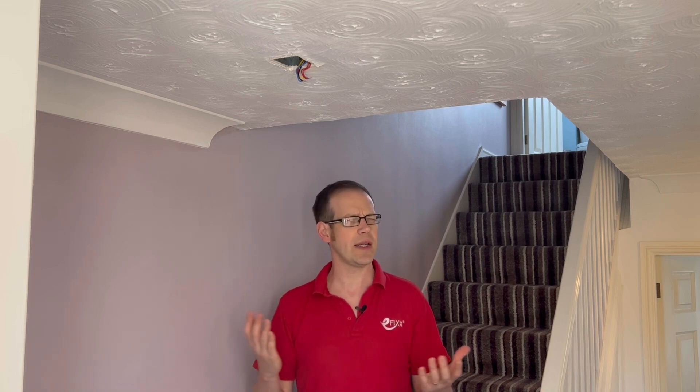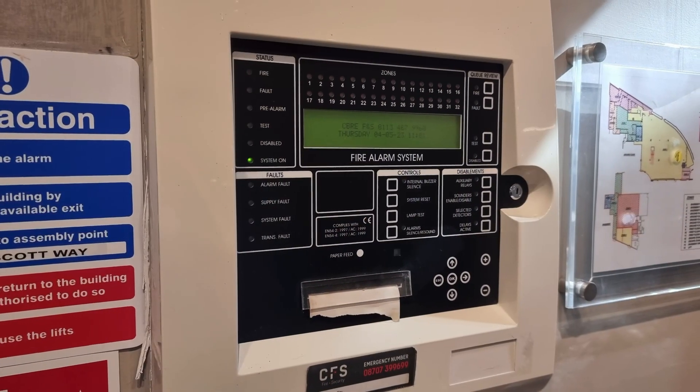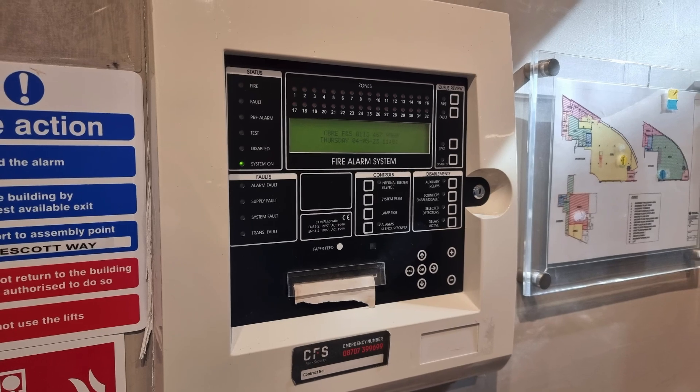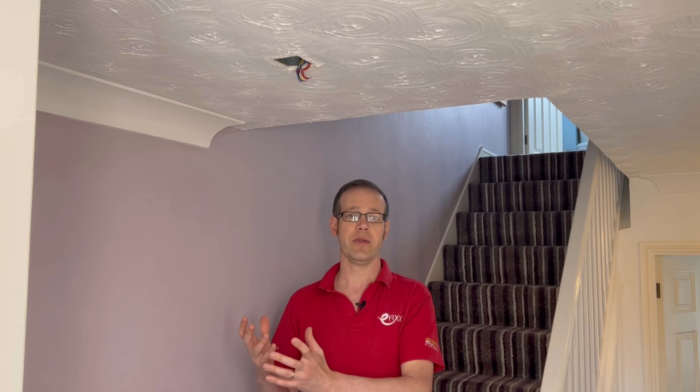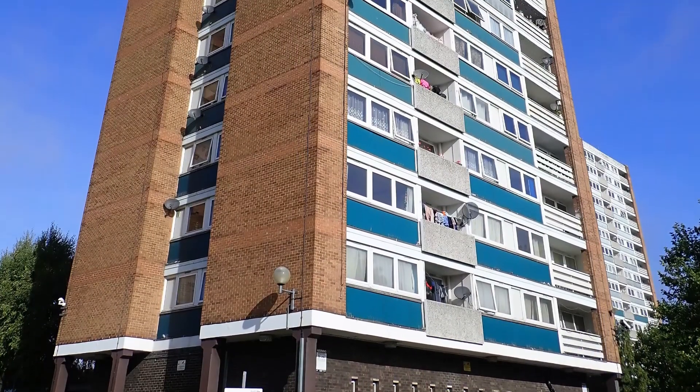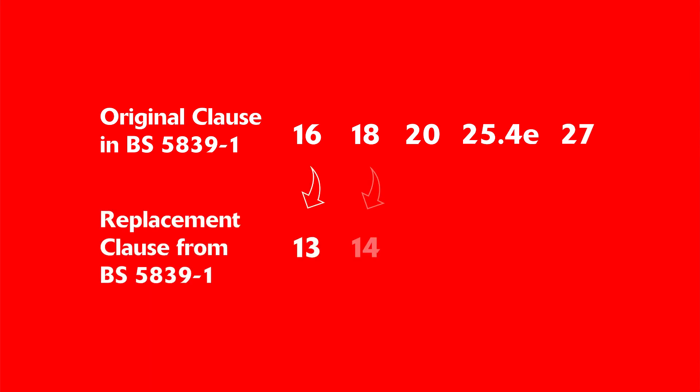You may notice there's a reference to Part 1 of BS 5839, which is not the part that refers to dwellings. A Grade A system is a type that would have a central panel to which all detectors and alarms are connected, processing far more information than a typical domestic system — even to the point of pinpointing the exact detector triggered. In the context of Part 6, this type of system could be found in a block of flats with common areas like corridors and stairwells. If so, the alarm must be installed in accordance with the sections outlined in Part 1 of BS 5839, apart from clauses 16, 18, 20, 25.4e, and 27 from Part 1, which get replaced with clauses 13, 14, 18, 15.2c, and 21 respectively from Part 6.